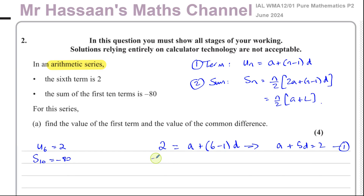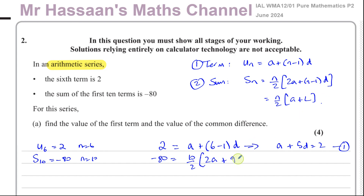And S10 equals negative 80. Using the sum formula with n equals 10: negative 80 equals 10 over 2 times (2a plus (10 minus 1) times d), which is 5 times (2a plus 9d). Expanding: 10a plus 45d equals negative 80.